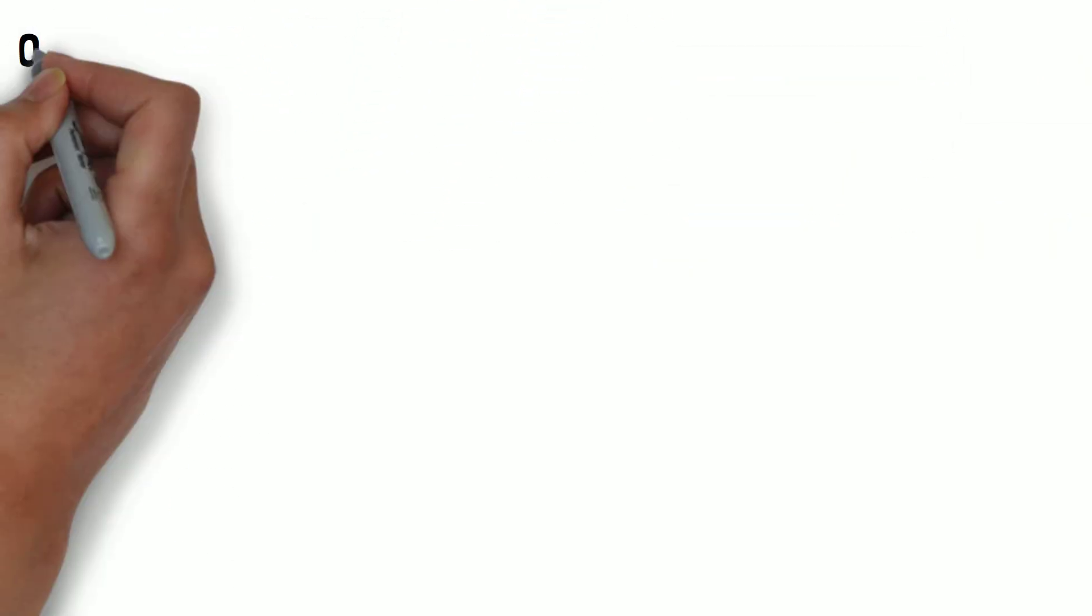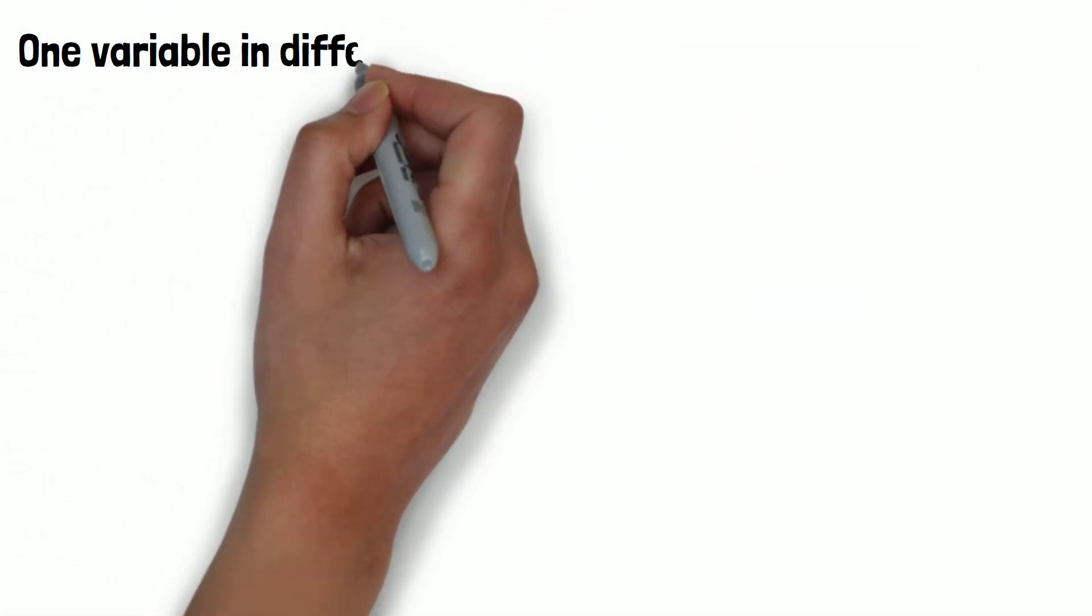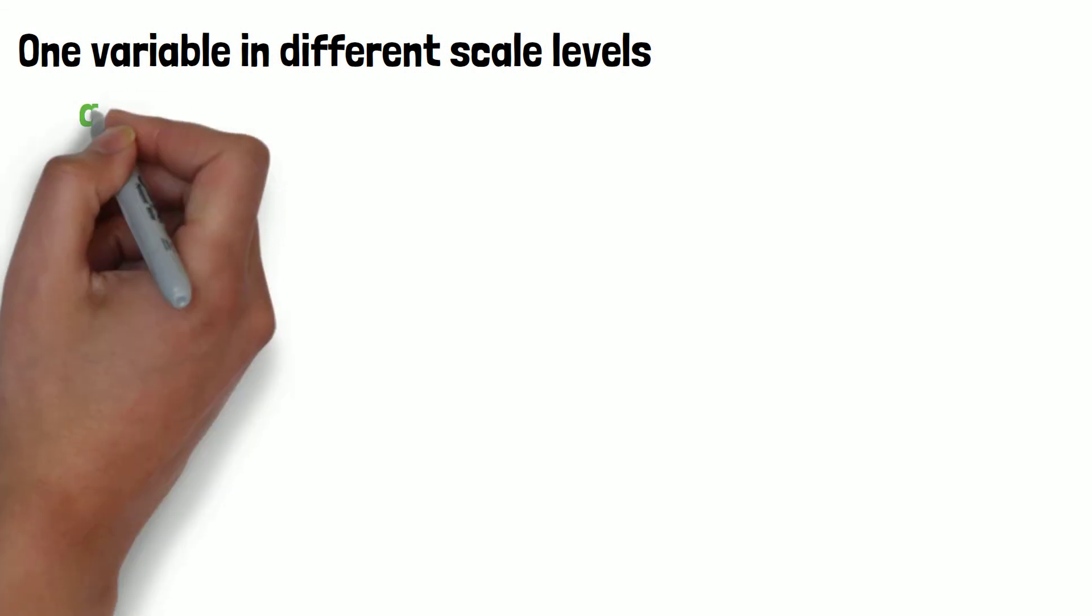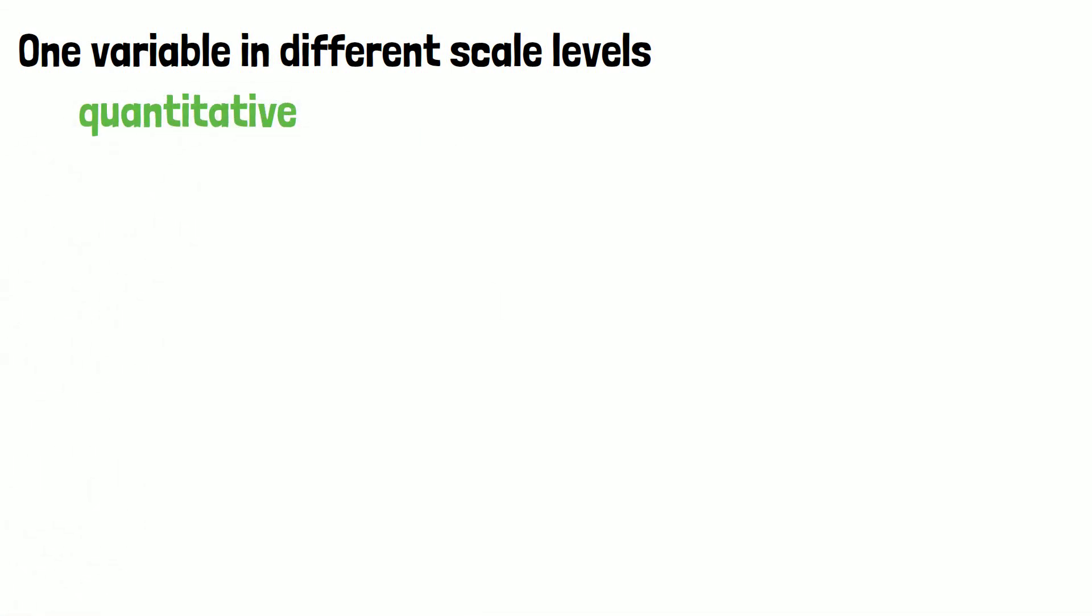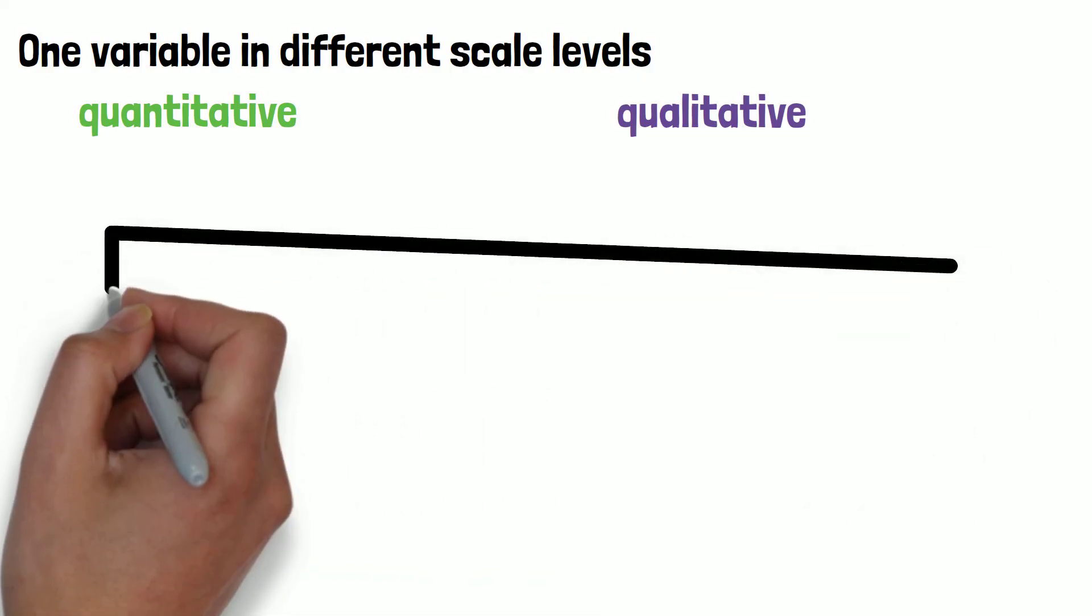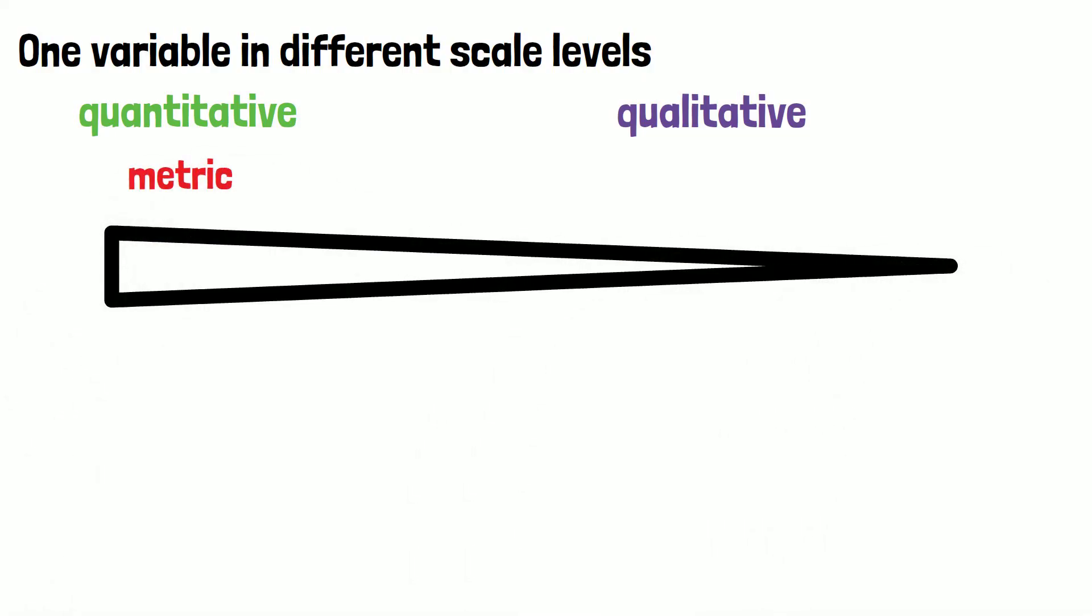Of course, it is possible to consider one variable in different scale levels, depending on what needs to be shown. It is always possible to transform a variable to a lower scale level, considering the highest status to be the metric scale, since it contains most information.